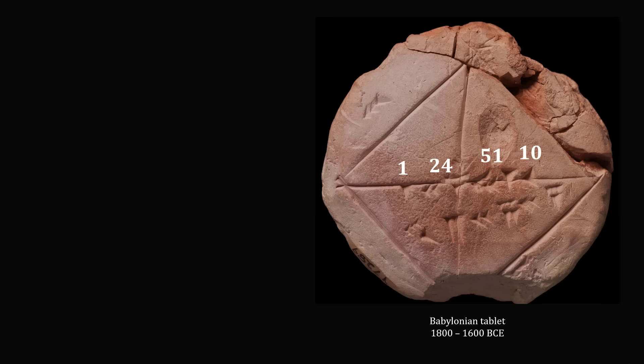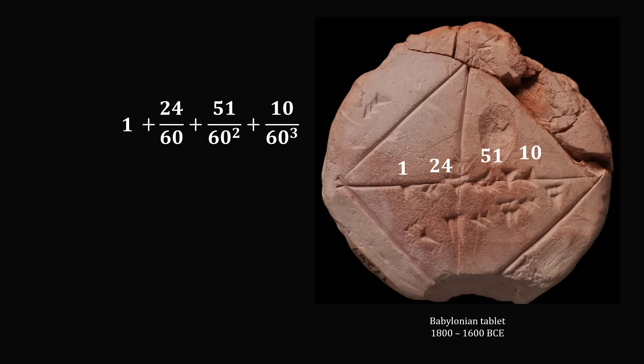What did these particular numbers represent? Studying other clues in the tablet, archaeologists were able to convert these numbers from base 60 into the regular numbers that we use. In particular, these numbers were coefficients of a mixed number where we had a whole part and fractions of powers of 60. These particular numbers all represented one number equal to 1 plus 24 over 60 plus 51 over 60 squared plus 10 over 60 cubed.